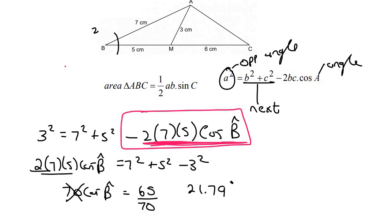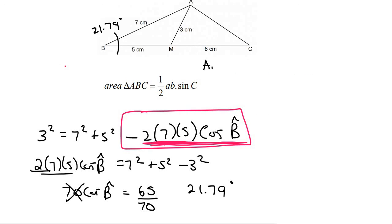So we now have this angle. Now we can use the area rule, because we can say that the area of, we want the whole one, ABC,